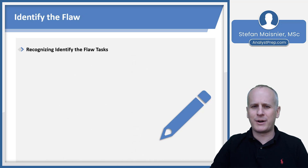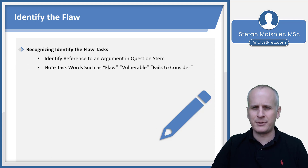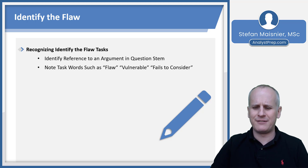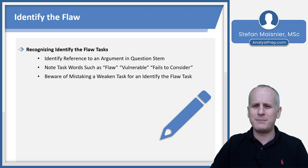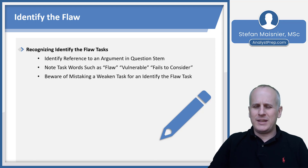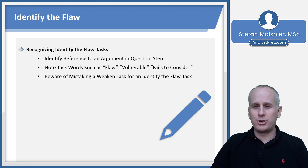How do we recognize and identify the flaw task? There's going to be a reference to an argument in the question stem. There will also be keywords such as flaw, vulnerable, and the phrase fails to consider. You have to be careful of mistaking a weaken task for an identify-the-flaw task. With a weaken task, you need additional information outside of the paragraph. With a flaw task, the flaw should already be there in the paragraph if you just think critically — that's the big difference between the two.